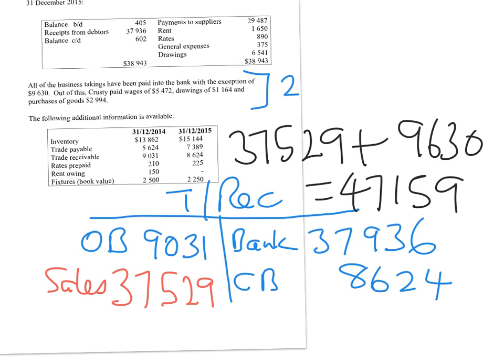On the next slide I'll show you how to find the missing purchases figure. Together with the opening inventory figure already given, we'll be able to find the gross profit — because gross profit requires sales less cost of sales, and cost of sales is made up of opening inventory plus purchases less closing inventory.